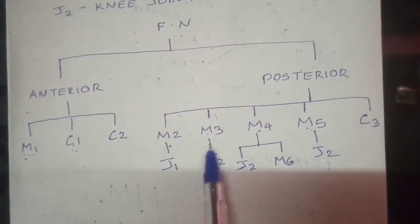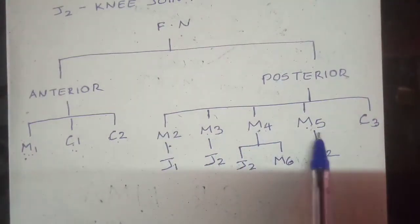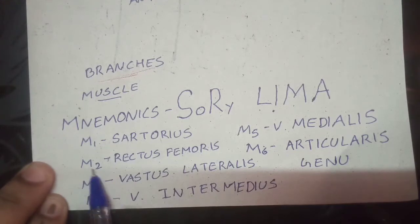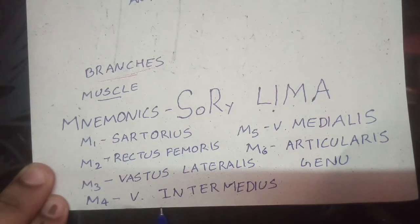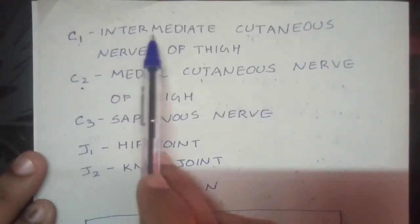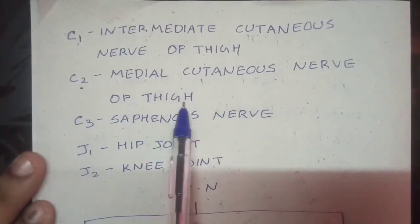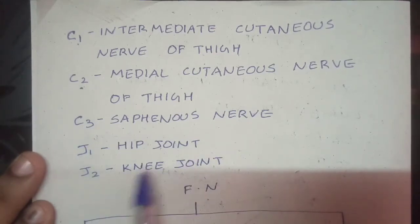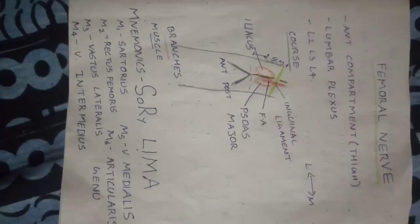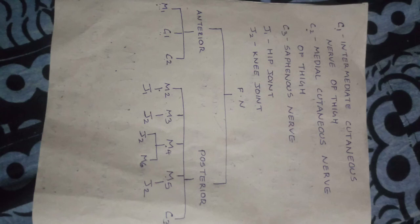If you know this diagram, you can memorize all the branches of the femoral nerve. To recap: the muscular mnemonic is M1 sartorius, M2 rectus femoris, M3 vastus lateralis, M4 vastus intermedius, M5 vastus medialis, M6 articularis genu. Cutaneous: C1 intermediate cutaneous nerve of thigh, C2 medial cutaneous nerve of thigh, C3 saphenous nerve. Joints: J1 hip, J2 knee. That's all for the femoral nerve — like, share, subscribe, and thank you for watching.